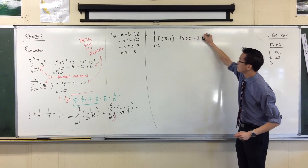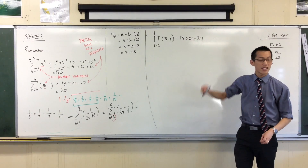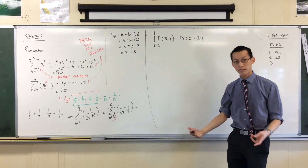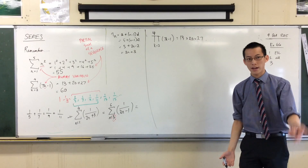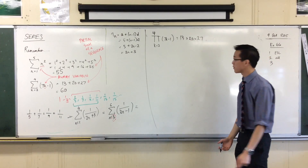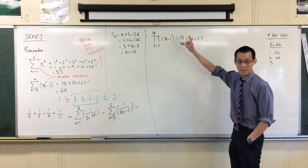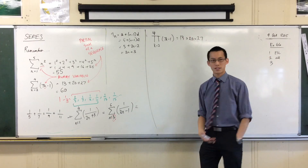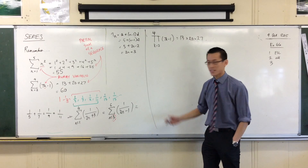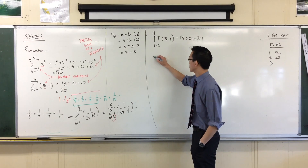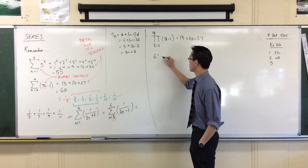Is it like factorial-ish? Kind of, yeah. So it's very easy to write factorial notation using this — not that you'd have to — but for instance, how do I write something like 6 factorial?